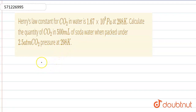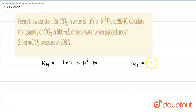So to solve this question, first Henry's constant KH is given as 1.67 × 10⁸ pascal. And partial pressure of carbon dioxide is given as 2.5 atmosphere.